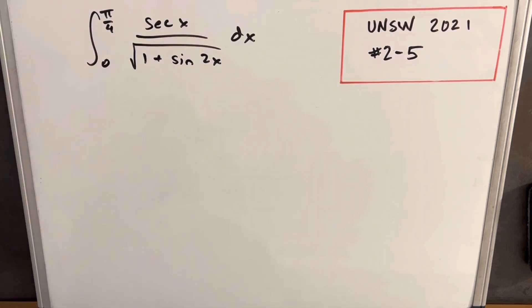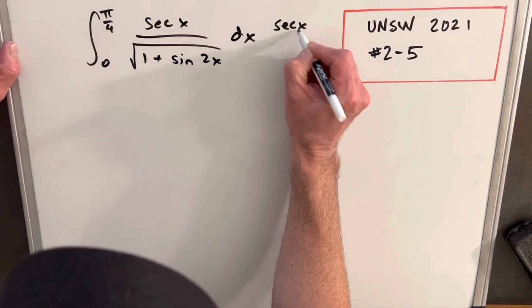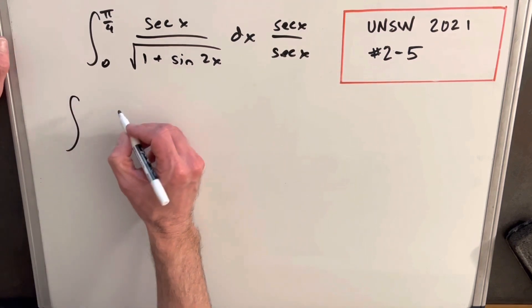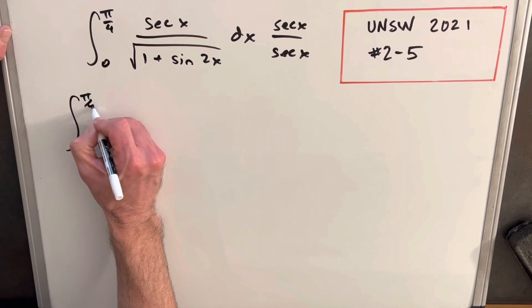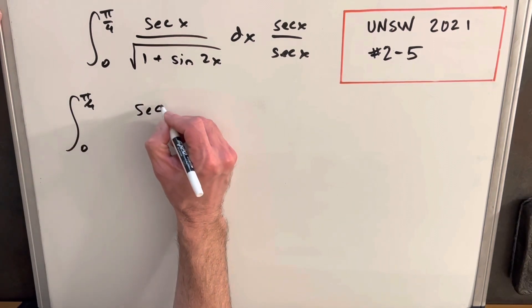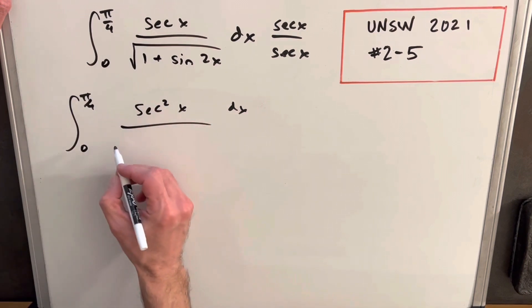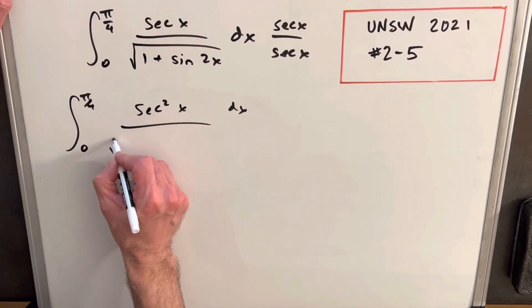Let's just give this thing a shot and see what happens. So I'm going to multiply our numerator and denominator by secant x over secant x. So we'll have our secant squared x in the numerator. Now for the denominator, this is going to be a little tricky. I'm going to try to save myself a step here.